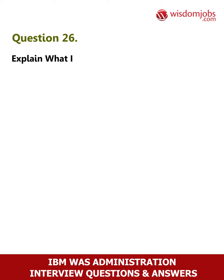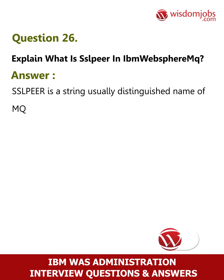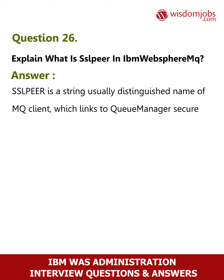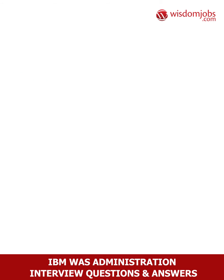Question 26: Explain what is SSL peer in IBM WebSphere MQ. Answer: SSL peer is a string, usually a distinguished name, of an MQ client which links to a queue manager securely using the queue manager. This is a mechanism used to identify the client.